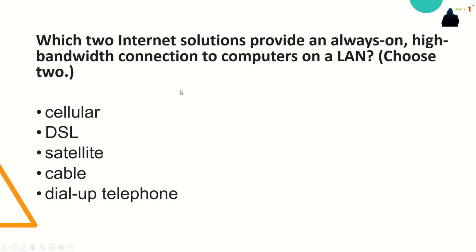The last question: which two internet solutions provide an always-on, high-bandwidth connection to computers on a LAN? The answer is cable and DSL. Cable and DSL provide high bandwidth, always-on connection, and internet connectivity to hosts, computers, or LANs.